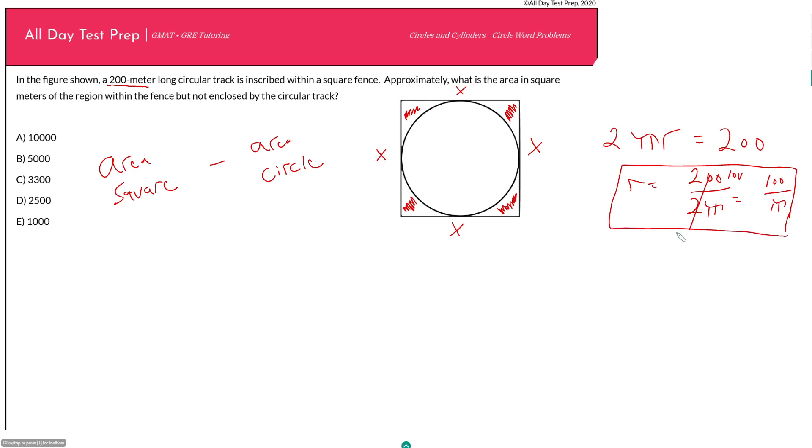How can we use that to find the length of one of the sides of our square? We know our radius from here to here is equal to 100 over π. Well, if this circle is inscribed within the square, then the length of one of the sides of our square should just be the diameter of our circle. So our x, which is also our d, should just be 2 times our radius, 200 over π.